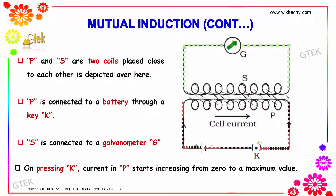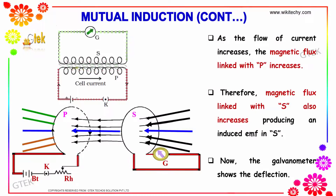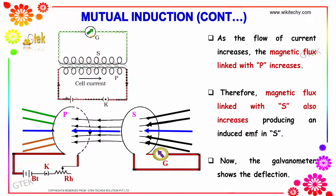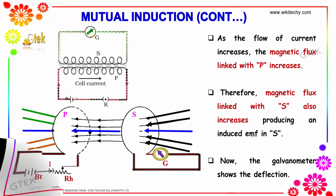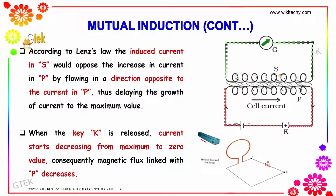On pressing K, the current in P starts from zero to a maximum value. As the current increases, the magnetic flux linked with P increases, and therefore the magnetic flux linked with S also increases, producing an EMF shown by the deflection of the galvanometer. According to Lenz's law, the induced current in S opposes the increase in current in P by flowing in a direction opposite to the current in P.